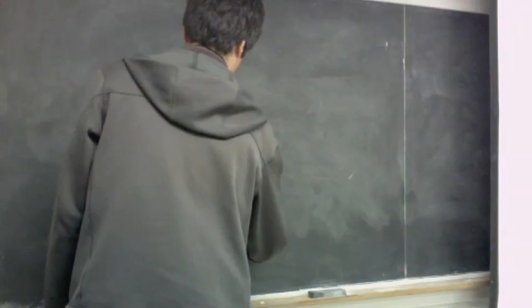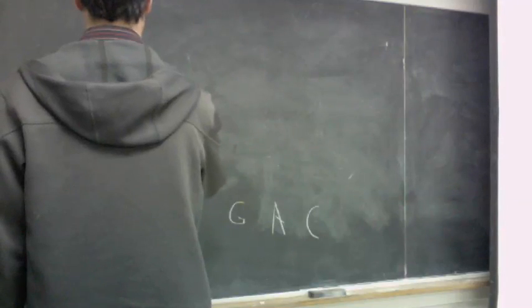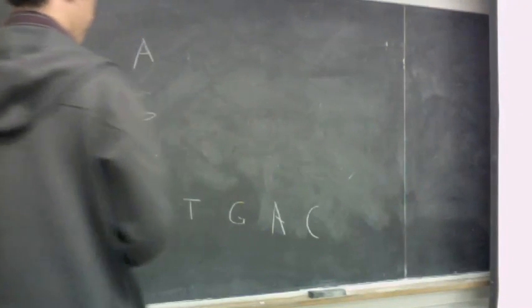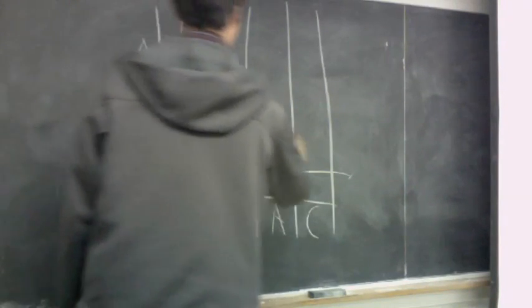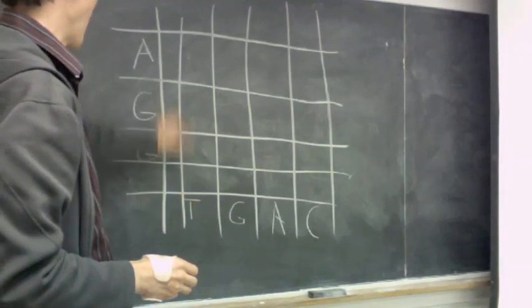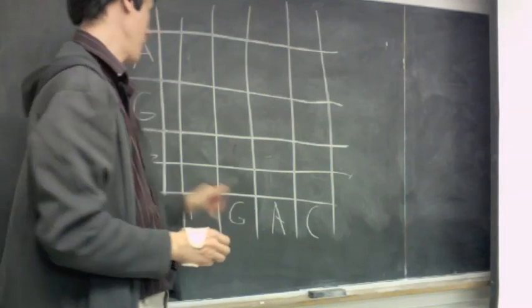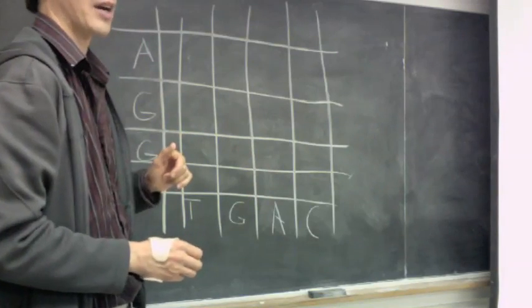Let's say on our x-axis, we have a sequence that goes something like T, G, A, C, and then maybe along our vertical, we'll have G, G, A. So, again, we subdivide our matrix, individual letters.